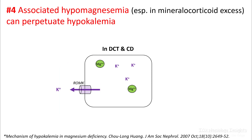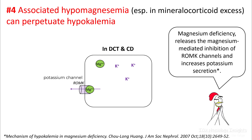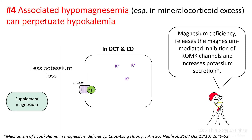Patients also have hypomagnesemia because of increased diuresis, especially in patients with mineralocorticoid excess and diuretic use, and this can perpetuate hypokalemia. Magnesium decreases the ability of potassium channels in the DCT and collecting duct to excrete potassium. Therefore, magnesium deficiency releases that magnesium-mediated inhibition of these channels and increases potassium secretion. So it is very important that you correct hypomagnesemia.